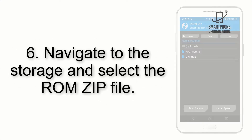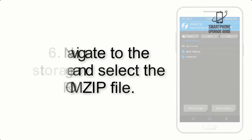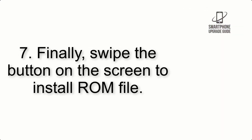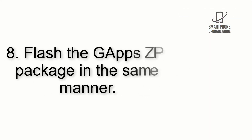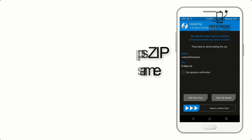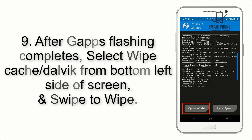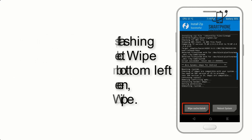Step 6: Navigate to the storage and select the ROM zip file. Step 7: Swipe the button on the screen to install the ROM file. Step 8: Flash the GApps zip package in the same manner. Step 9: After GApps flashing completes, select Wipe Cache and Dalvik from the bottom left side of the screen and swipe to wipe.